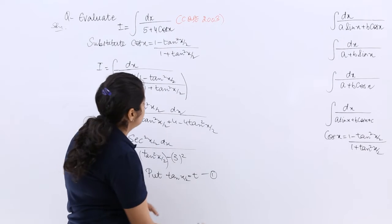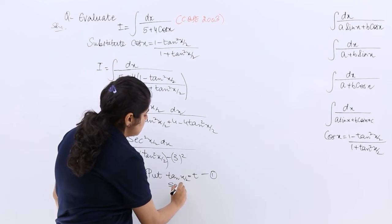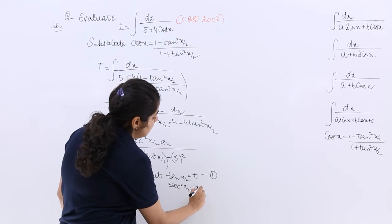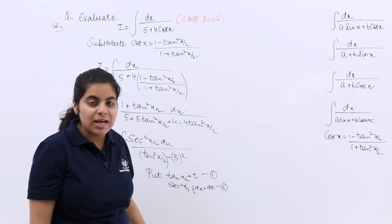So I am putting tan(x/2) = t. Let me name this as equation number 1. Till now, there was no equation. Then you can see that sec²(x/2) · (1/2) dx = dt. This information you know.